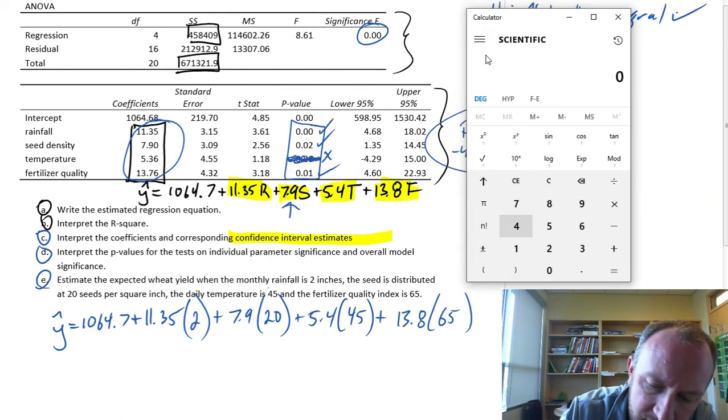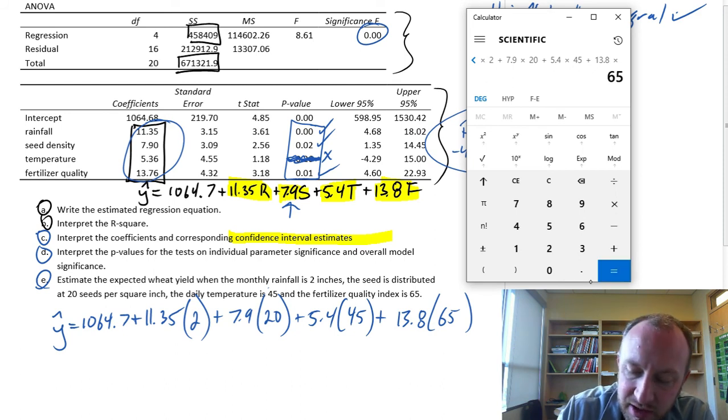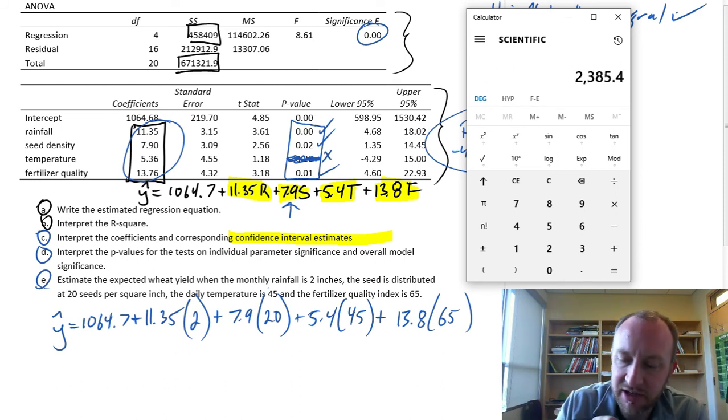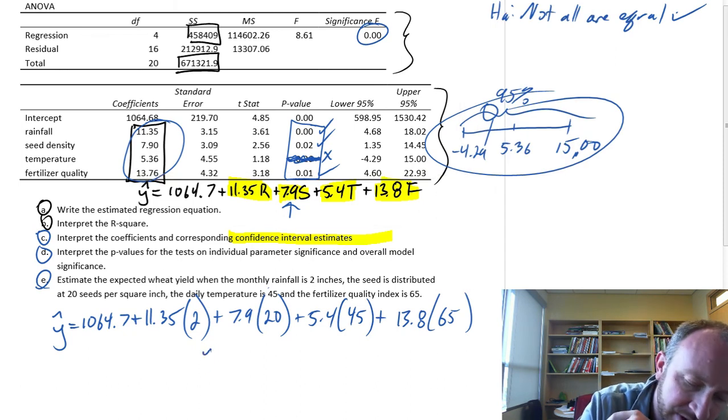I'm going to pull out my trusty little calculator. This is going to be 1064.7 plus 11.35 times 2 plus 7.9 times 20 plus 5.4 times 45 plus 13.8 times 65. And we have an estimated wheat yield of 2385.4. And this is measured in pounds.